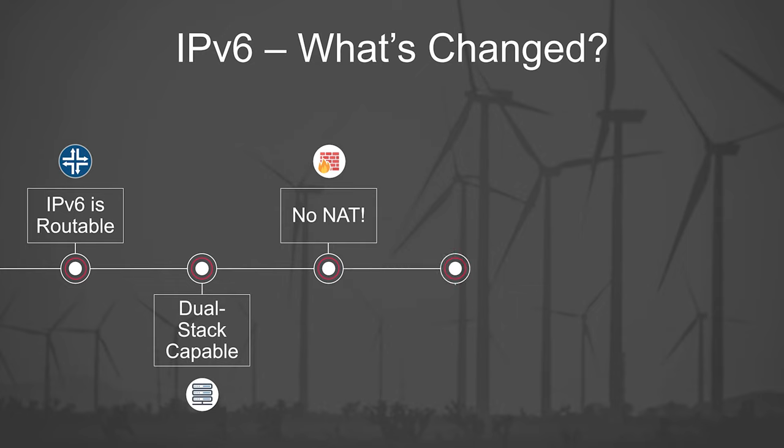A few of the older technologies have been refreshed. In place of ICMP is ICMPv6 — we'll see how this has grown in upcoming videos. DHCP and DNS have been enhanced to make DHCPv6 and DNSv6. DNSv6 even comes with a new record type called the Quad-A record. And routing protocols have been extended to support IPv6 — in a later video, we'll see how to use OSPFv3.